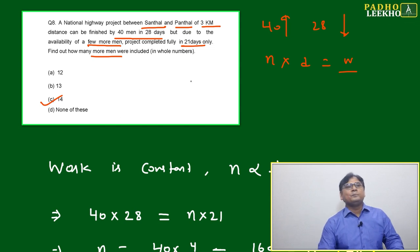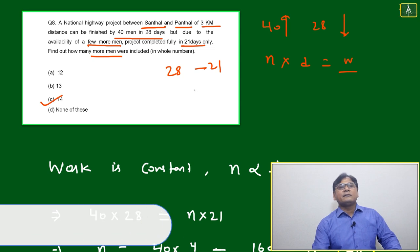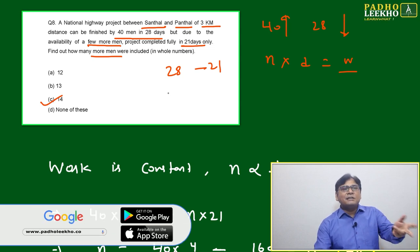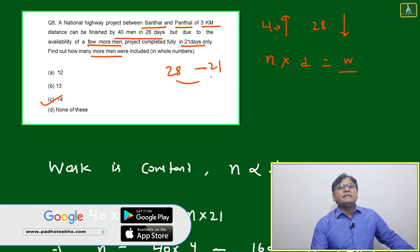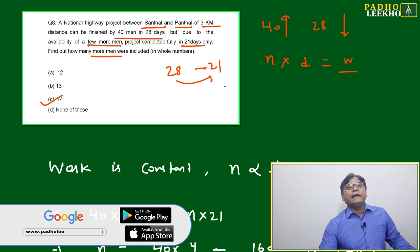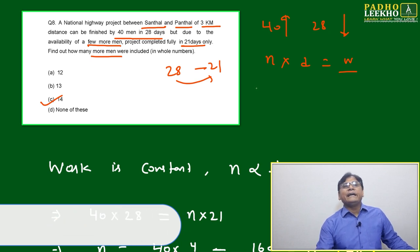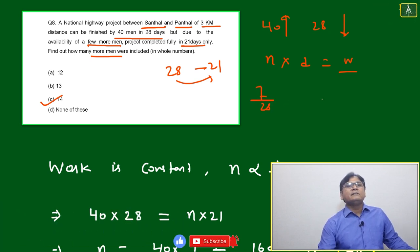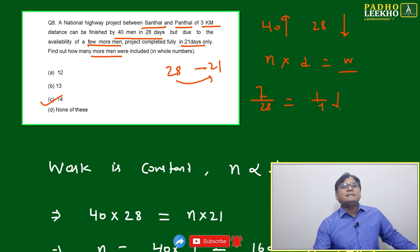What is happening here? 28 is changing to 21. How much change is there? Just reverse way you have to change. This has changed 28 to 21. 7 out of 28, 7 out of 28 will be 1 by 4. 1 by 4 has decreased.